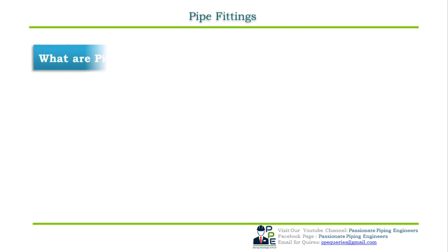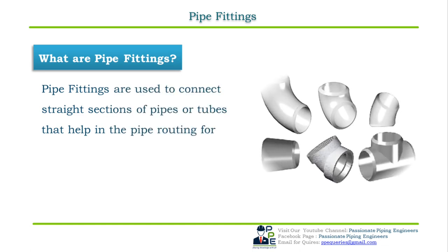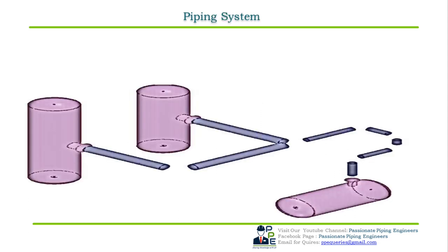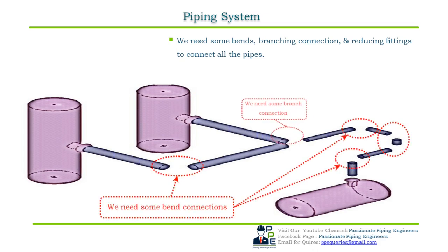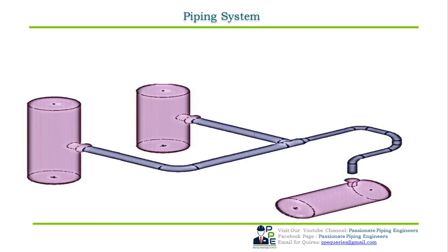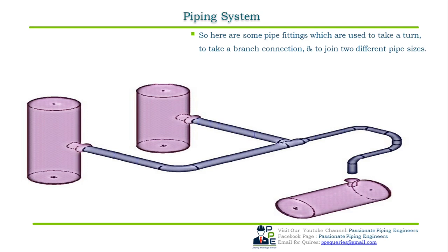Pipe fittings are used to connect straight sections of pipes or tubes and help in pipe routing for directional changes — that is, elbows; branch connections — that is, tees; and size changes — that is, reducers or expanders. Coming back to our system, we need directional bend fittings at certain points, a branch connection, and a reducing fitting to connect the two different line sizes.